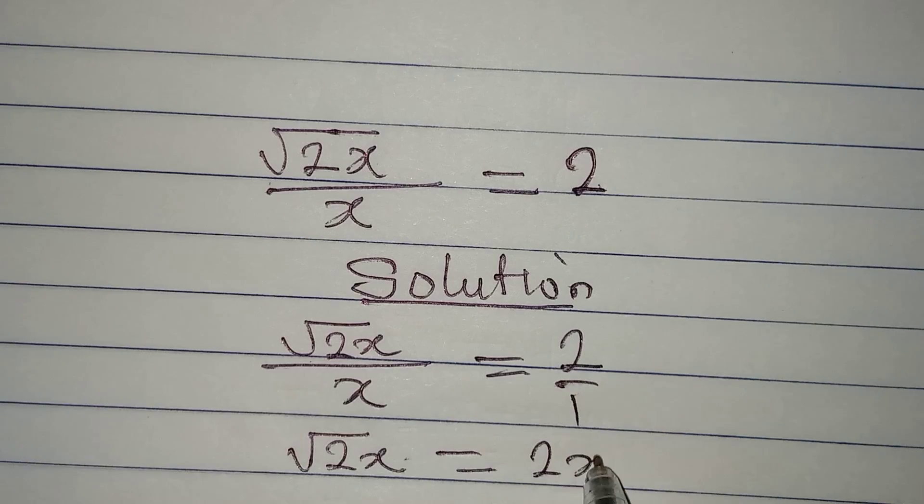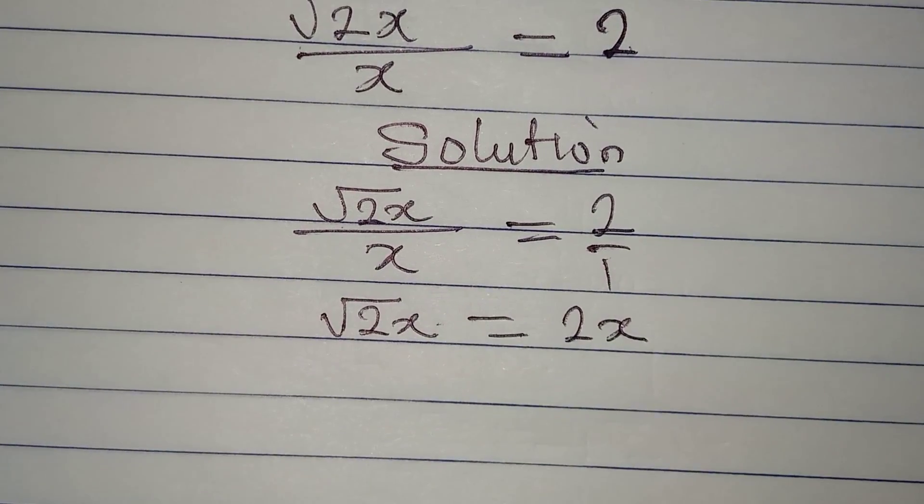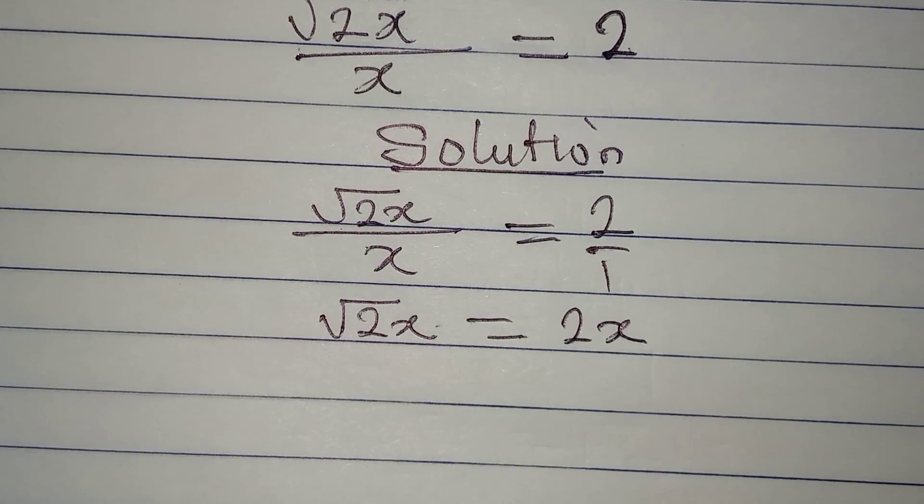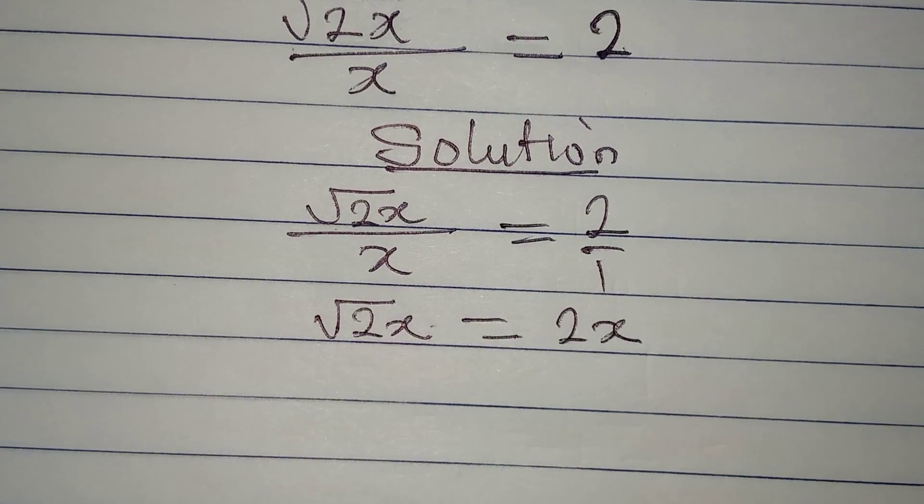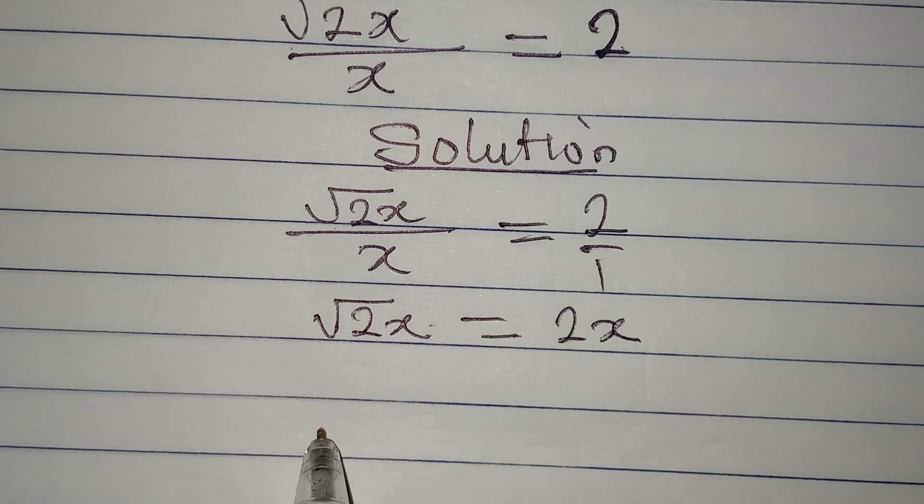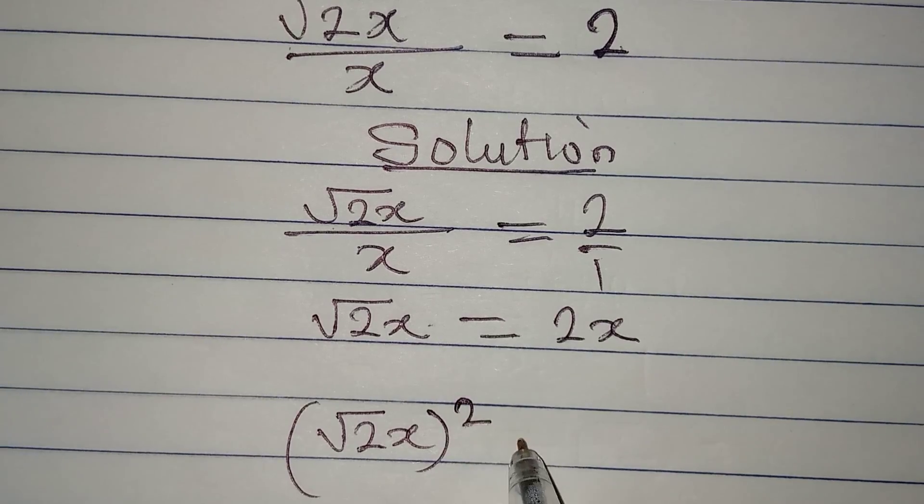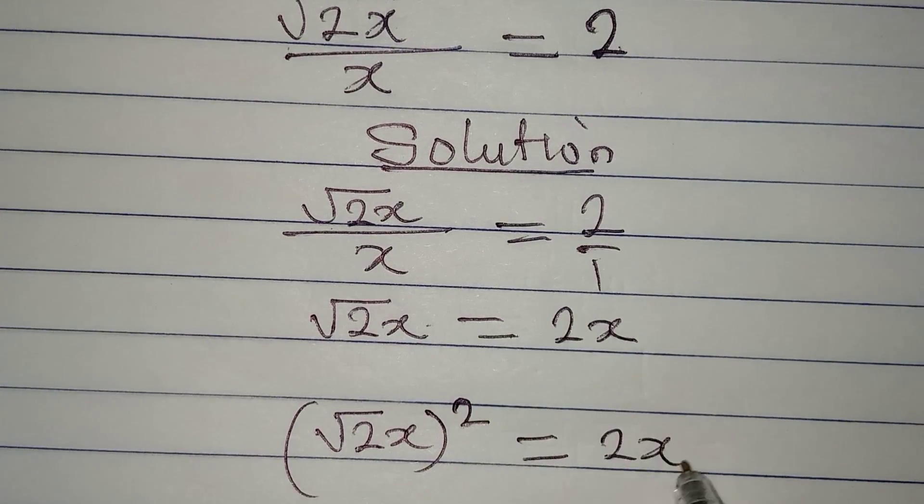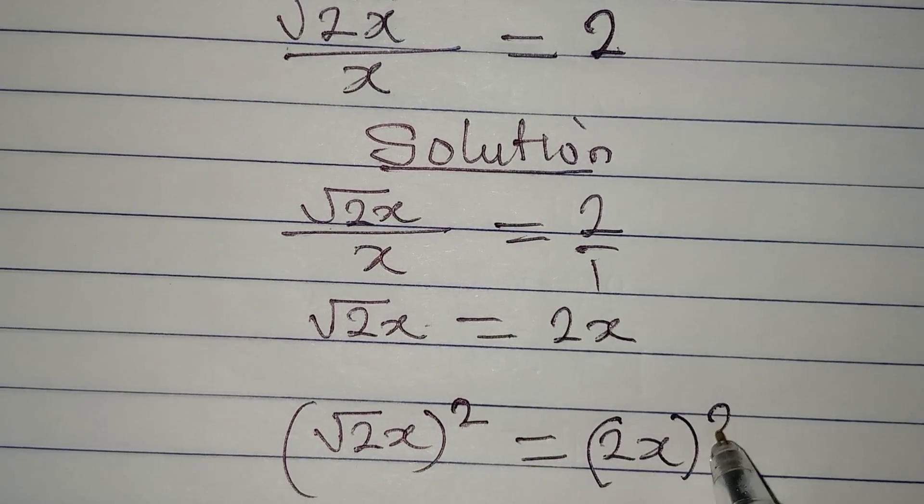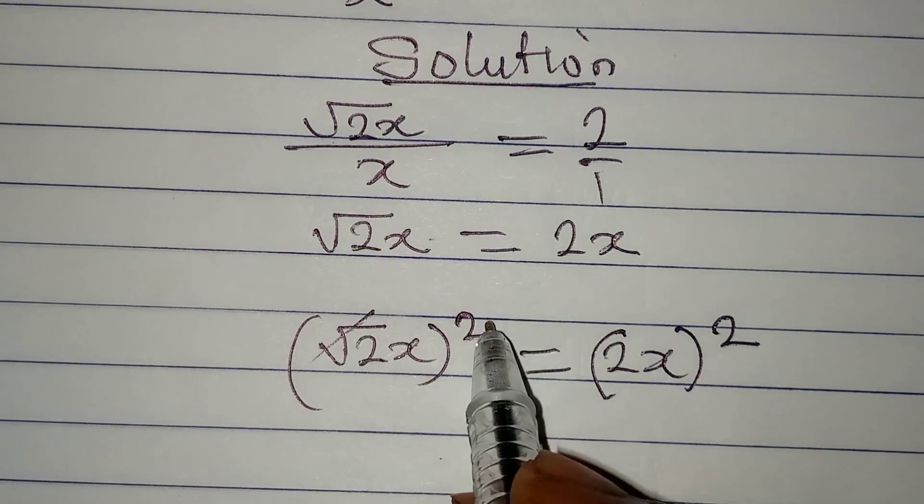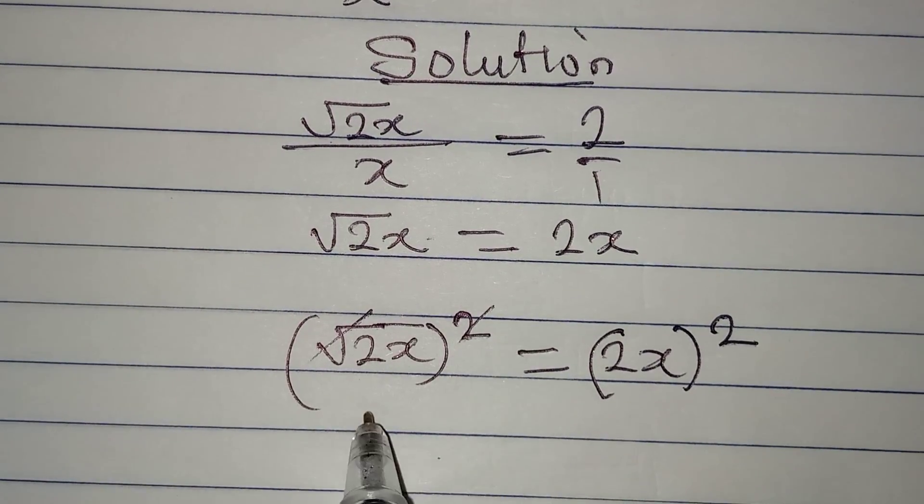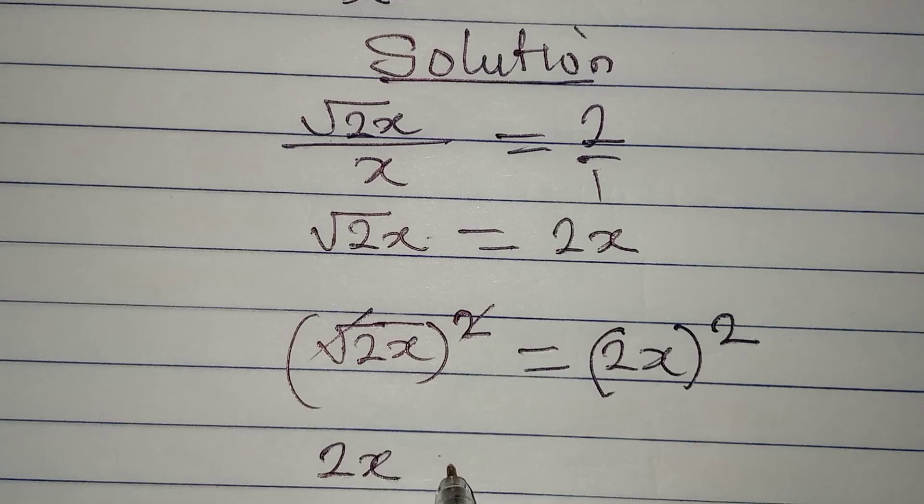Now what do we do? Remember that we need to remove this square root, and we do that by taking the square of both sides. So we square this which will be equal to 2x, and the whole of this will be squared as well. This will cancel this so that 2x will now be equal to 2x squared. Times 2x squared will give 4x squared.